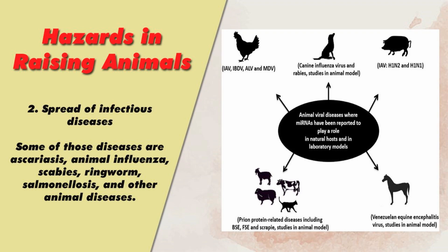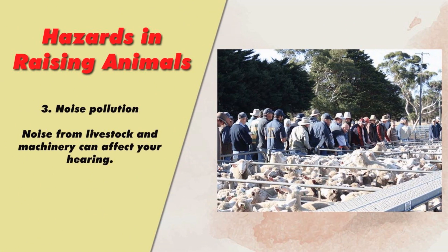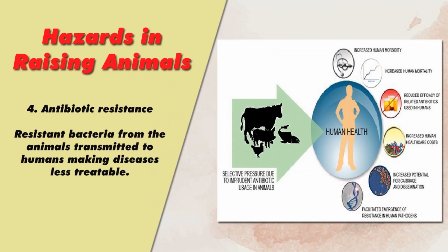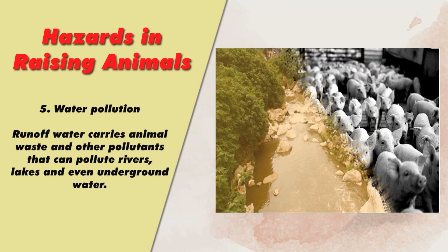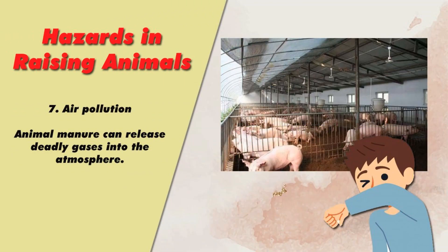Two: Spread of infectious diseases. Some of those diseases are ascariasis, animal influenza, scabies, ringworm, salmonellosis, and other animal diseases. Three: Noise pollution. Noise from livestock and machinery can affect your hearing. Four: Antibiotic resistance. Resistant bacteria from animals transmitted to humans, making diseases less treatable. Five: Water pollution. Runoff water carries animal waste and other pollutants that can pollute rivers, lakes, and even underground water. Six: Air pollution. Animal manure can release deadly gases into the atmosphere.